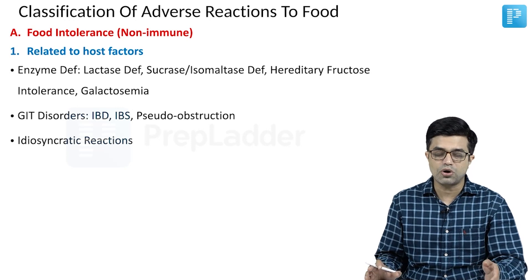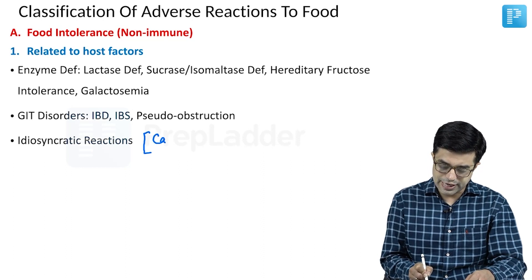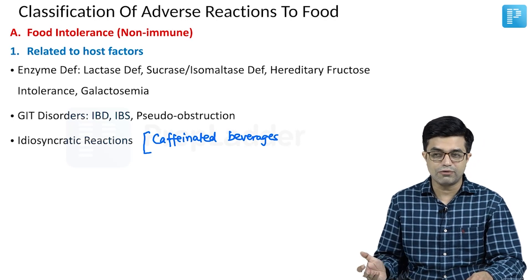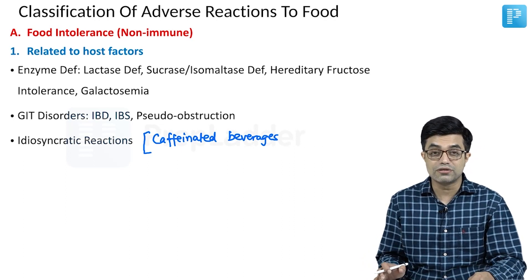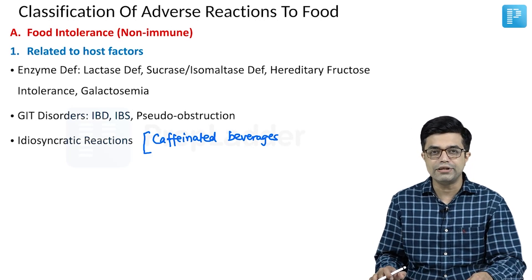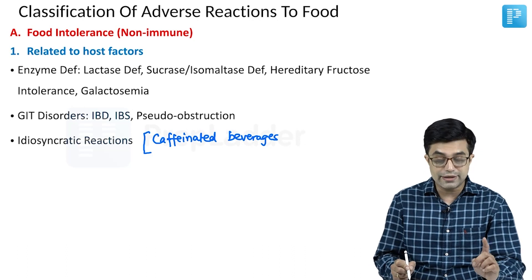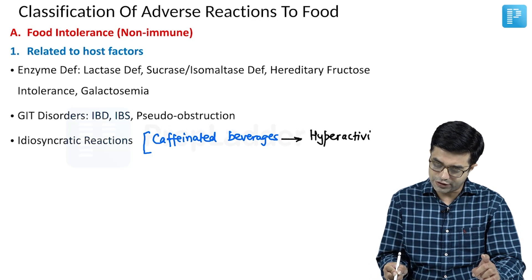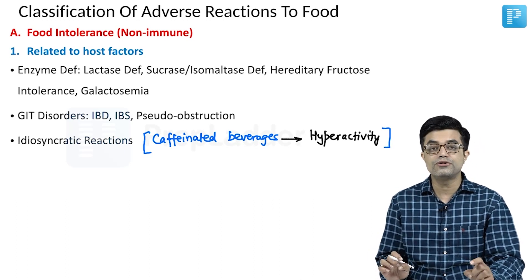Such reactions are called idiosyncratic reactions. The typical example is when certain children take caffeinated beverages — not only tea and coffee, but also colas, energy drinks like Red Bull, all of which contain caffeine. When caffeinated beverages are taken by most people they are normal, but in certain children they can produce hyperactivity lasting as long as the caffeine stays in the body. That is called an idiosyncratic reaction.